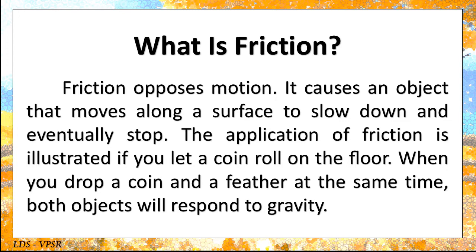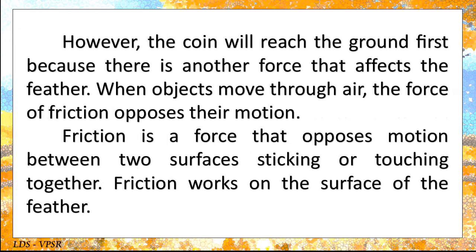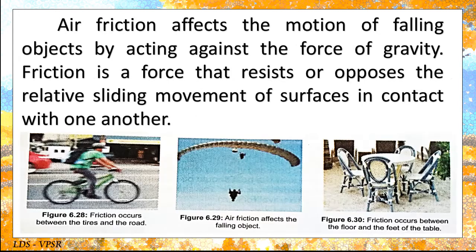The application of friction is illustrated if you let a coin roll on the floor. When you drop a coin and a feather at the same time, both objects will respond to gravity. However, the coin will reach the ground first because there is another force that affects the feather. When objects move through air, the force of friction opposes their motion. Friction is a force that opposes motion between two surfaces sticking or touching together. Air friction affects the motion of falling objects by acting against the force of gravity. Friction is a force that resists or opposes the relative sliding movement of surfaces in contact with one another.